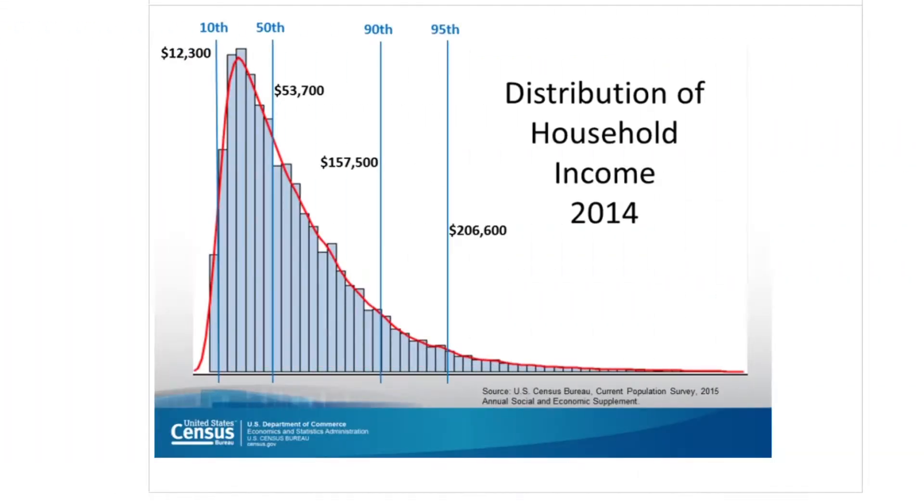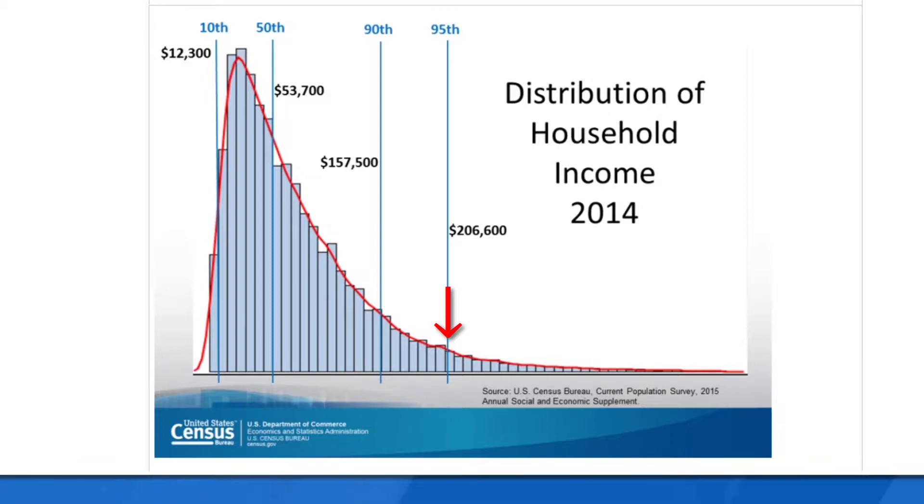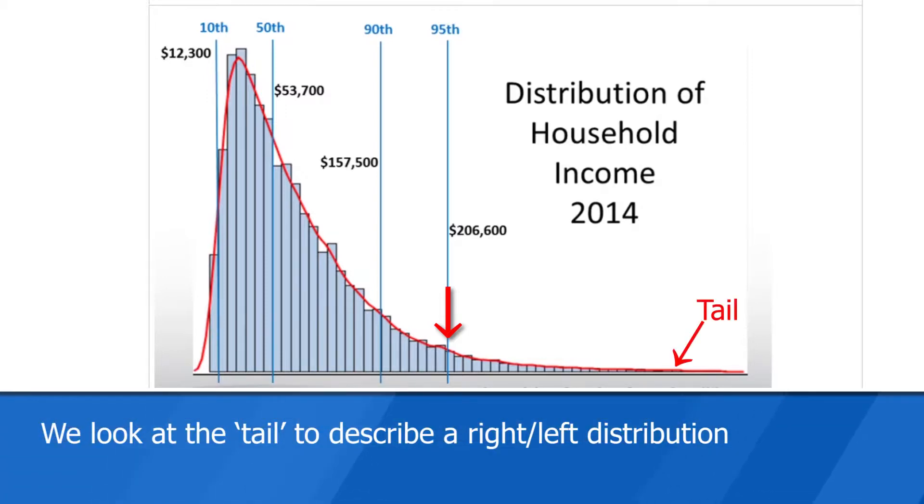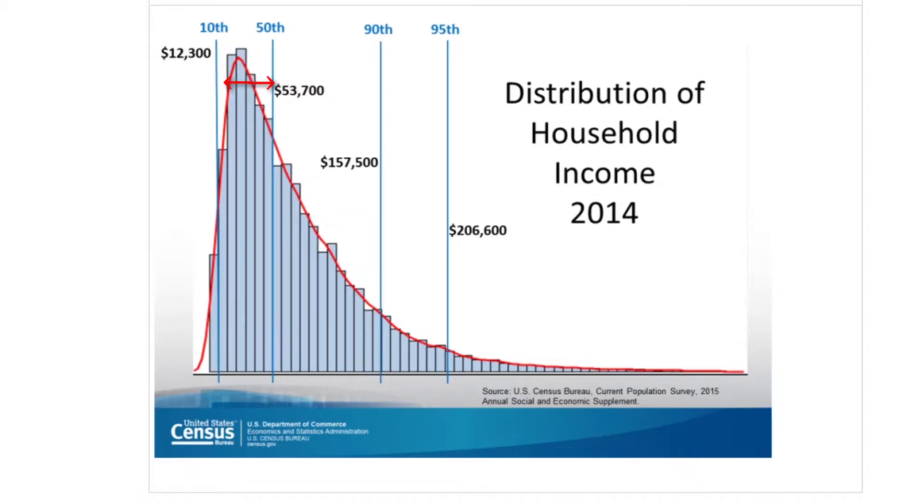This chart shows a frequency distribution created by the United States Census of income distribution in 2014. And we wouldn't expect to see very many people at all making above $206,600 in 2014. And you can see that most people lie between, you know, $12,353.7, although it's not that uncommon to go higher. But once you get up to the half a million dollar a year mark, boy, there's not very many people making that kind of money. So this is a positively skewed distribution.